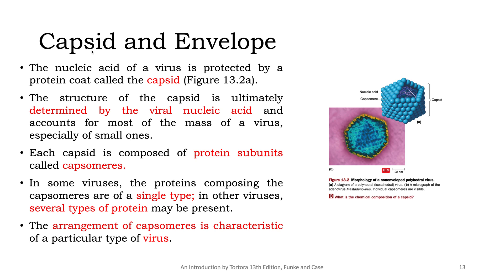The capsid is the protein coat surrounding the nucleic acid, providing protection. The structure of the capsid is determined by the nucleic acid components. Each capsid is composed of protein units called capsomeres, which can be made of a single protein type or different proteins. The arrangement of capsomeres is very characteristic for a particular virus and is also used in viral classification.